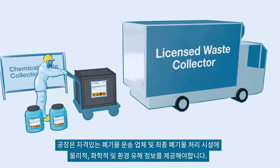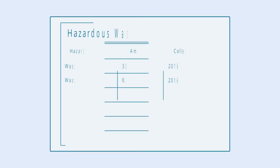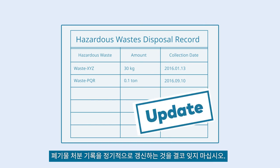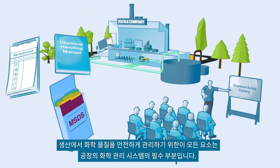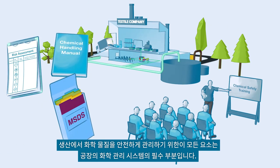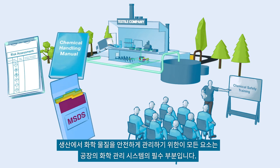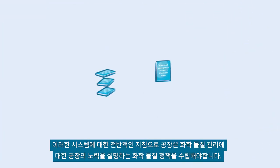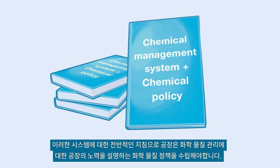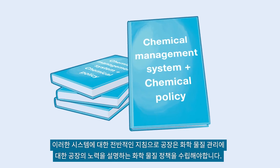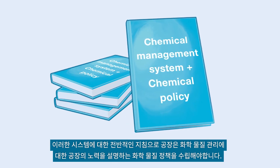Factories must provide physical, chemical, and environmental hazard information to their qualified waste transporters and the final waste disposal facility. Do not forget to regularly update your waste disposal records. All these elements for safely managing chemicals in production form essential parts of the chemical management system of a factory. As an overall guidance for such a system, the factory should formulate a chemical policy that outlines the factory's commitment to chemical management.